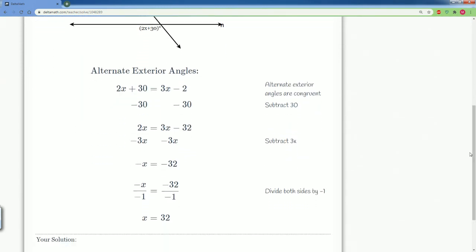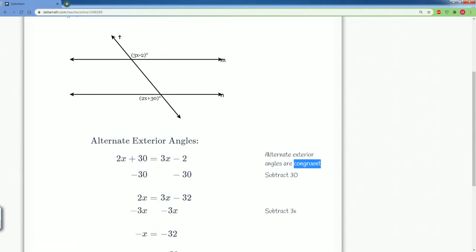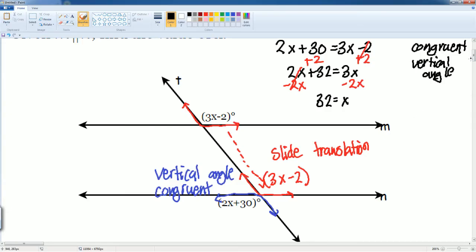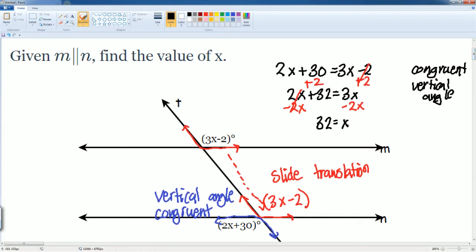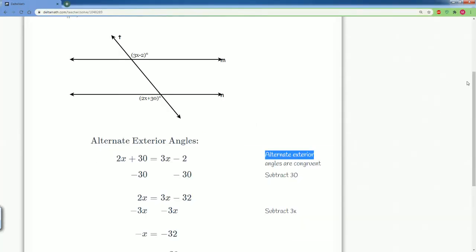So we are allowed to set up this equation because they are congruent. This does have a special name, it's called alternate exterior. But the way we did it was we translated down and saw that they're vertical angles. And we know that vertical angles are congruent.